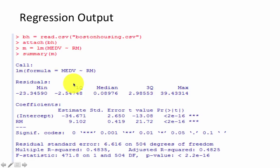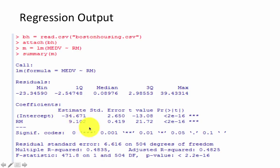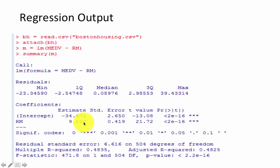Once you find their values, you can plug them into the regression equation, and that becomes your regression model. We get the coefficient intercept, which is beta-zero, and the coefficient Rm, which is the coefficient for the number of rooms. So the regression equation says: price equals minus 34 — that's beta-zero — plus 9.102, which is beta-one, times Rm, the number of rooms. If you're given a new home with 5 rooms, the predicted price is minus 34.671 plus 5 times 9.102.